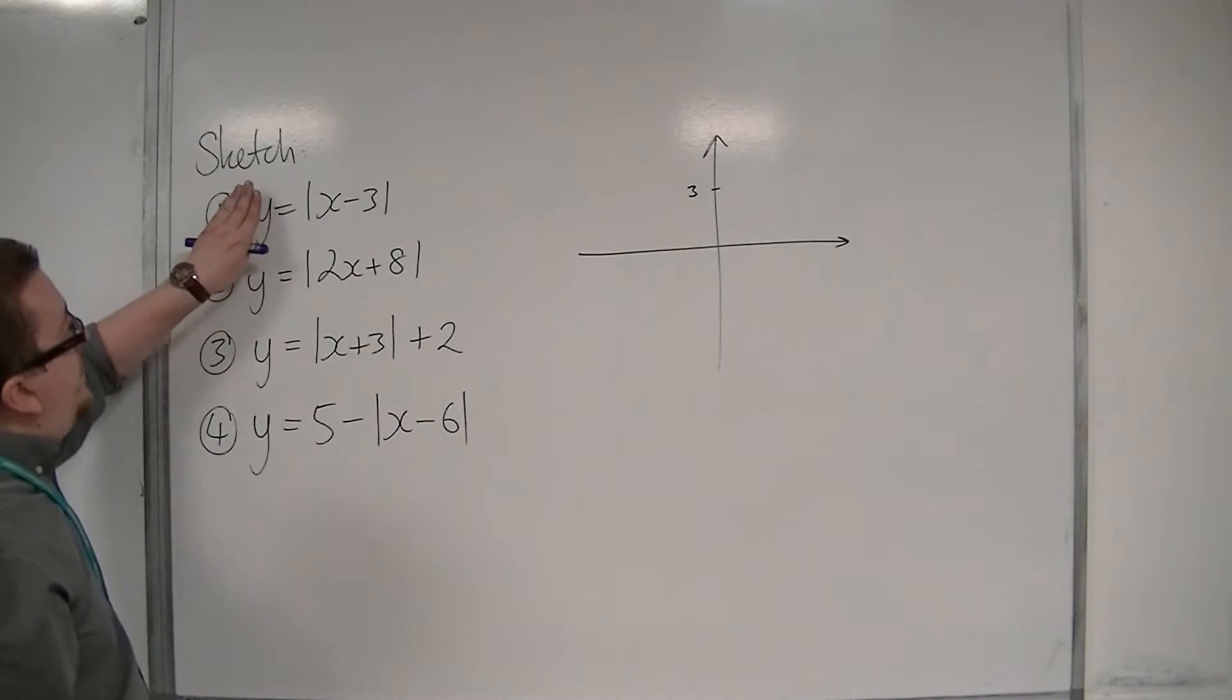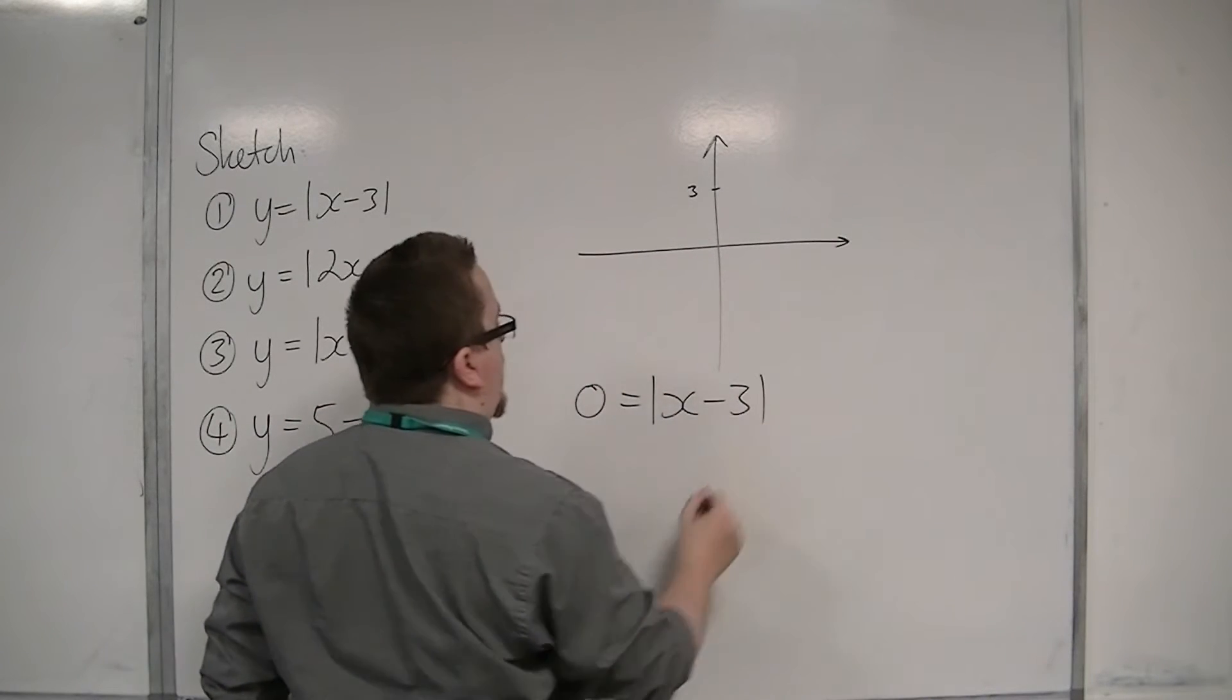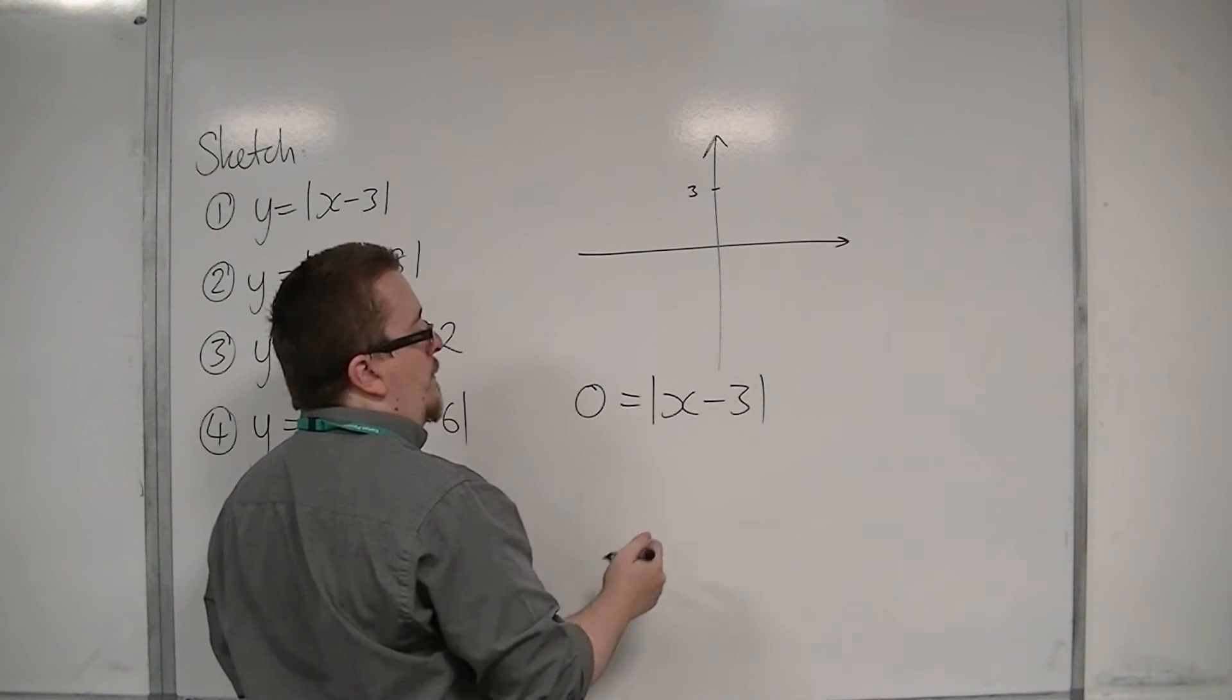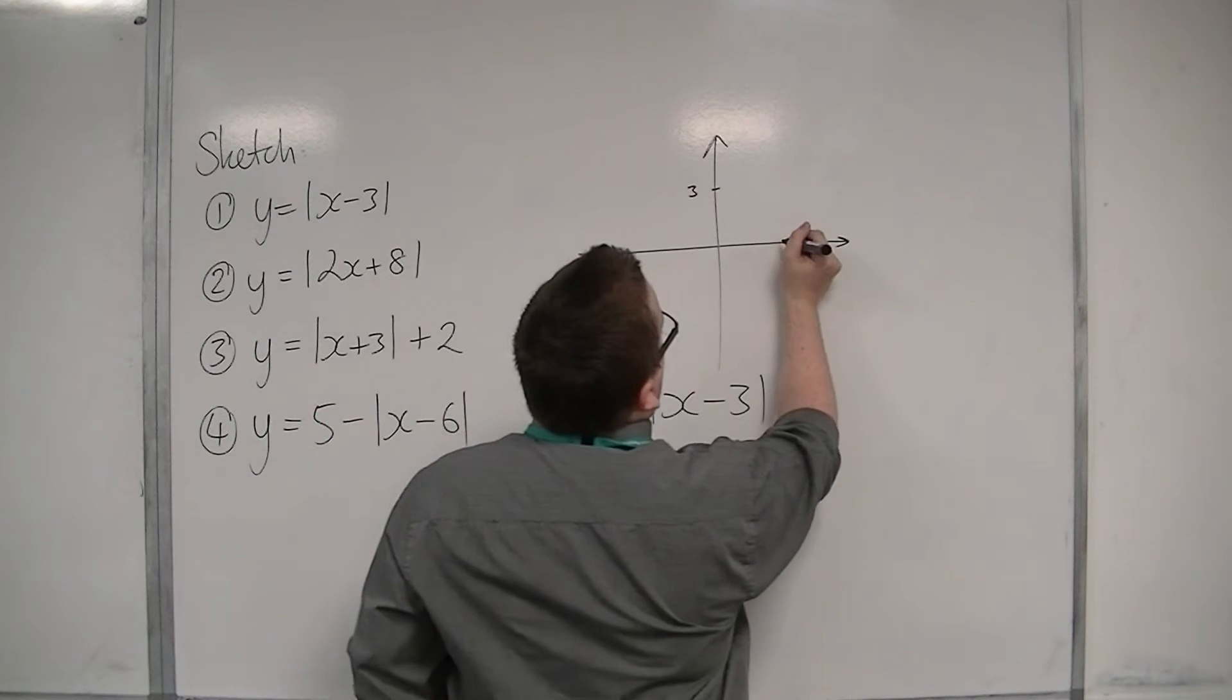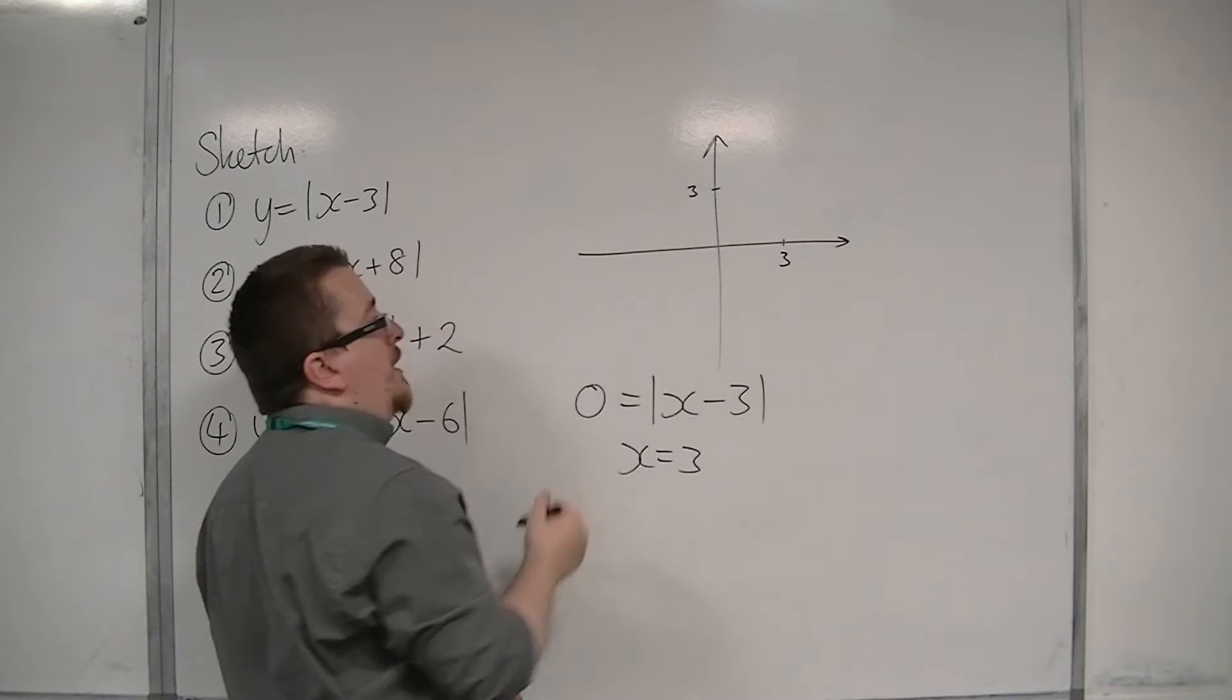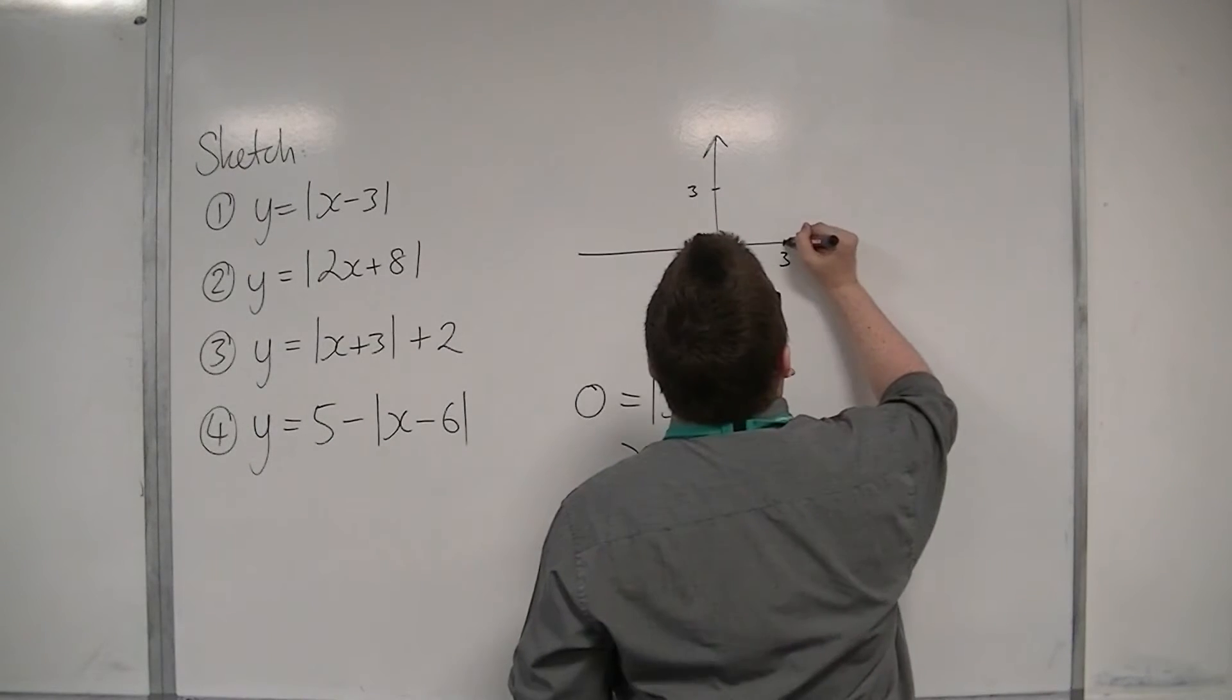Now when y is zero, we're going to get zero equals mod x minus 3. The only way you can have the modulus of something being zero is if what's inside is zero, so x must be three. And so it must go through three on the y-axis and touch three on the x-axis. The curve would look like this.